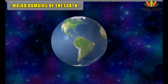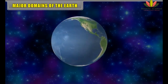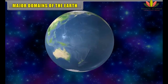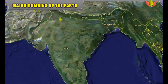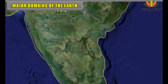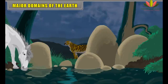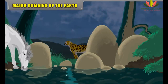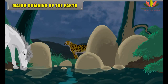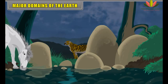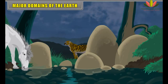Major domains of the earth. Our earth has a unique distinction of being at a reasonable distance from the sun. The earth provides a suitable environment which is favorable for the origin and sustenance of all types of life — human life, plant life and animal life.